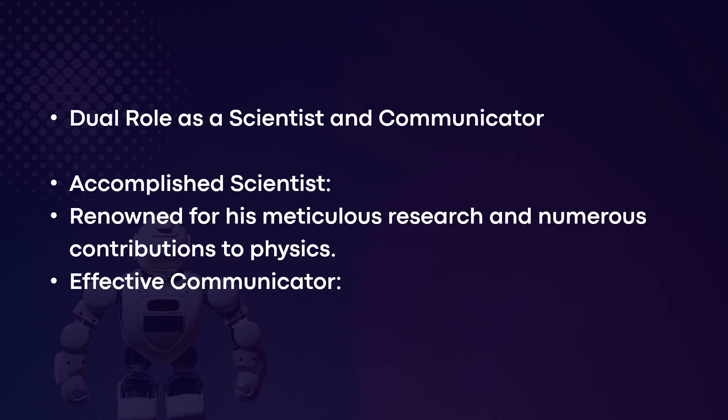Let's analyze the dual role of C.V. Raman as a scientist as well as a communicator. He was a well-accomplished scientist who won the Nobel Prize for Physics in 1930, renowned for his meticulous and systematic research and numerous contributions to physics. Apart from all these things, he was also a very effective communicator — a person who could effectively communicate his knowledge to his peers, to his students, and to the general public.